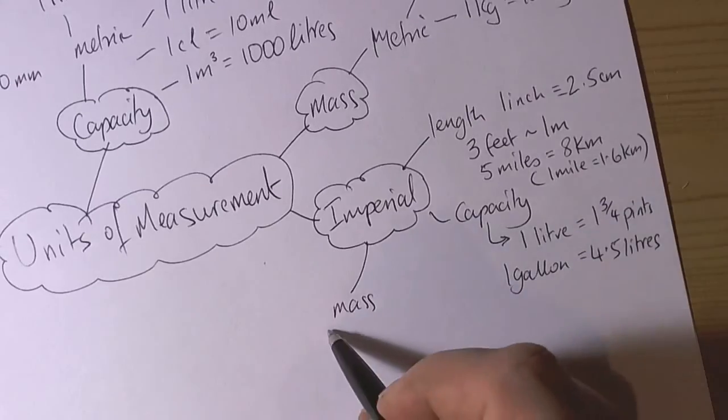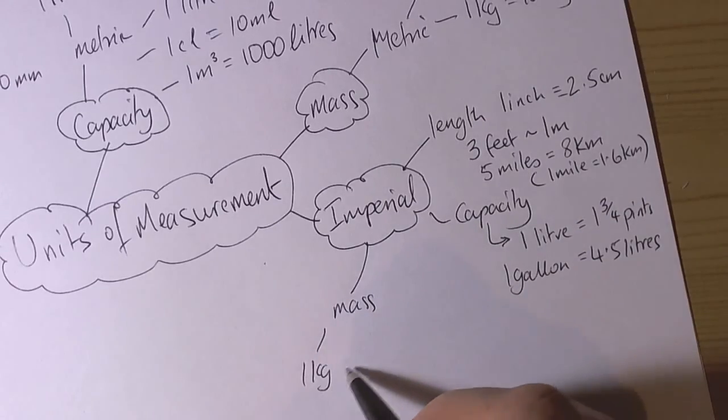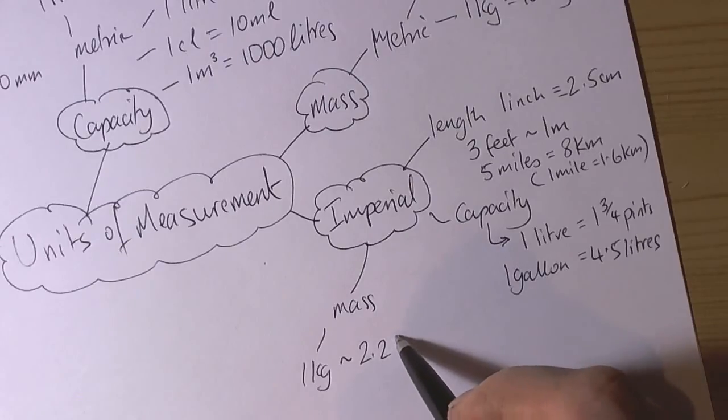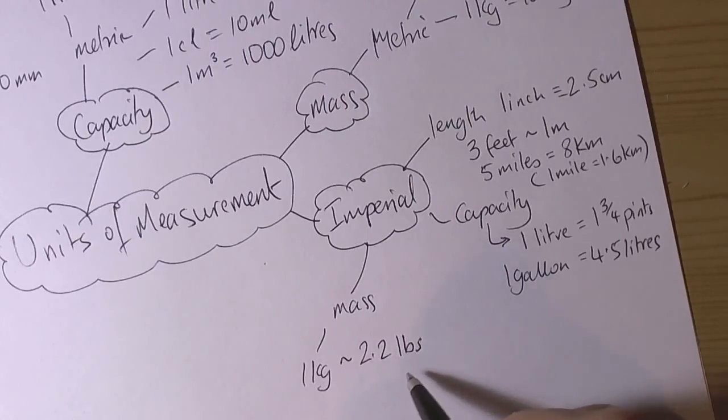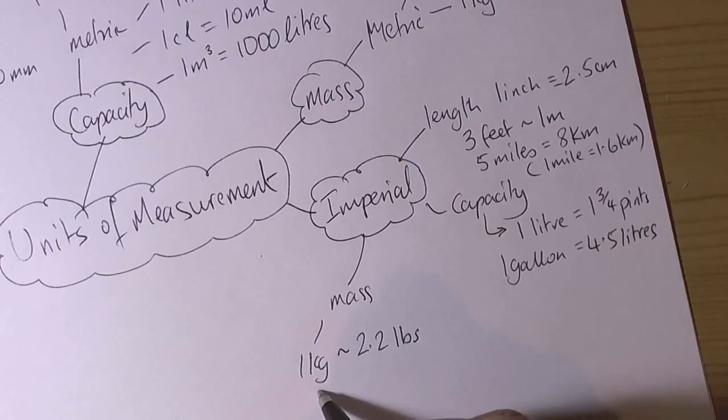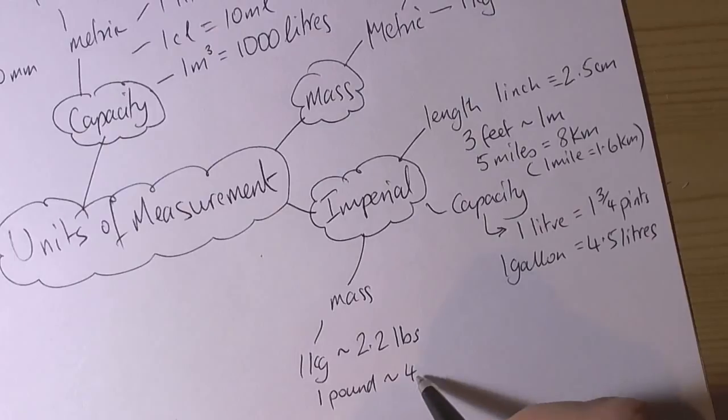For mass, we need to recognise that 1 kilogram is approximately 2.2 pounds. 1 pound is approximately 454 grams.